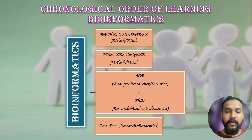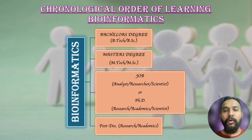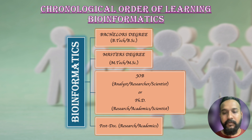You have to do a PhD if you want to do further research, be in academics, or become a scientist. After the PhD is done, you should go for a postdoc if you want to stay in the academic setting and eventually become an associate professor or professor at a government institution or government-affiliated college in India.